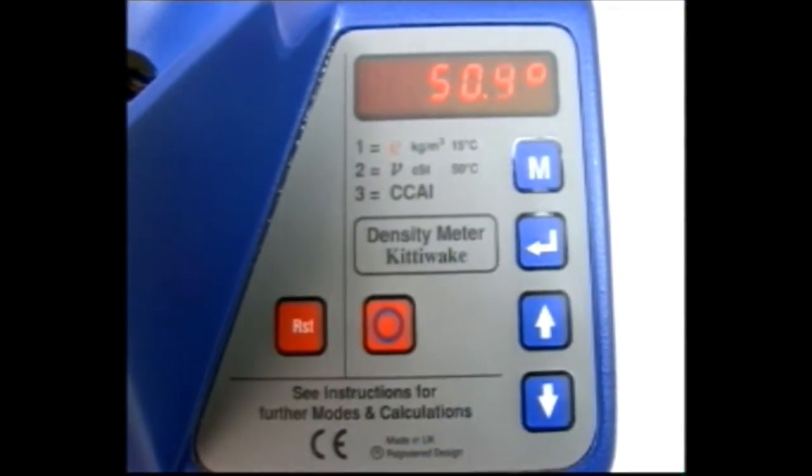The meter is ready for testing and will now ask for the uncorrected hydrometer reading in mode 1. Stir the oil again with the stirring rod.